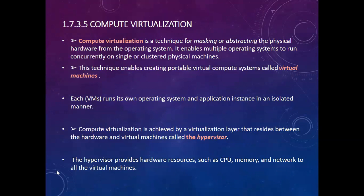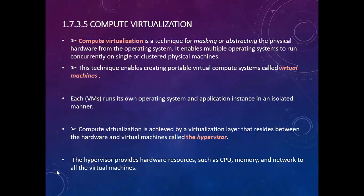Compute virtualization is achieved by a virtualization layer that resides between the hardware and the virtual machines, called the hypervisor. This hypervisor exists between your hardware resources and the virtual machines running on your computer. Between the virtual machine and the hardware resources, there is a layer called the virtualization layer, also called the hypervisor. The hypervisor provides hardware resources such as CPU, memory, and network to all the virtual machines.